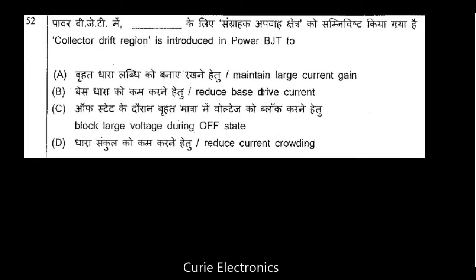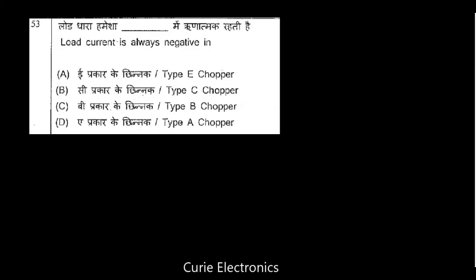Question number 52: The collector drift region is introduced in a power BJT to block large voltage during the off state. Question 53: Load current is always negative in a Type B chopper.